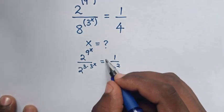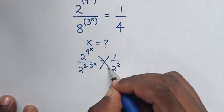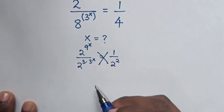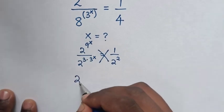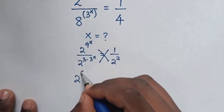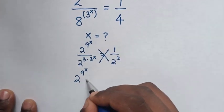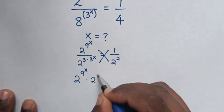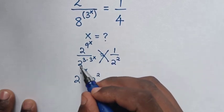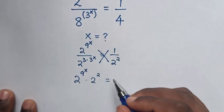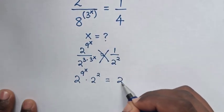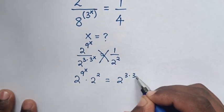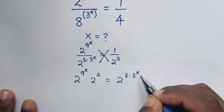Then in the next step we will cross multiply. So it will be 2^(9^x) times 2^2 is equal to 2^3 times 3^x.